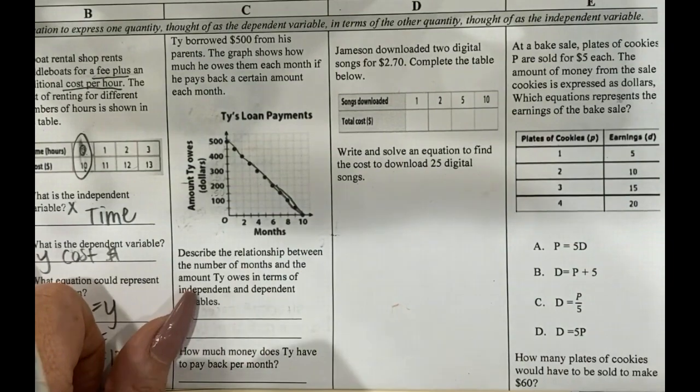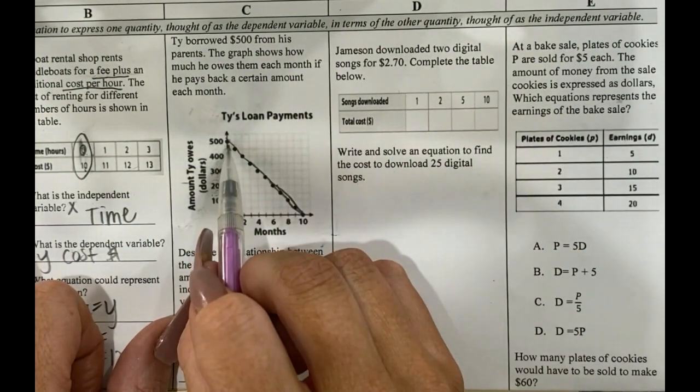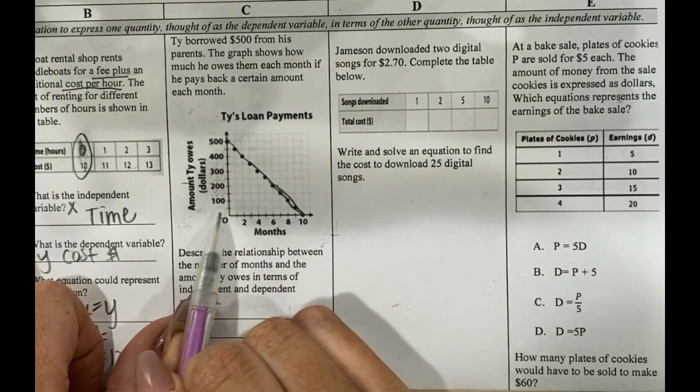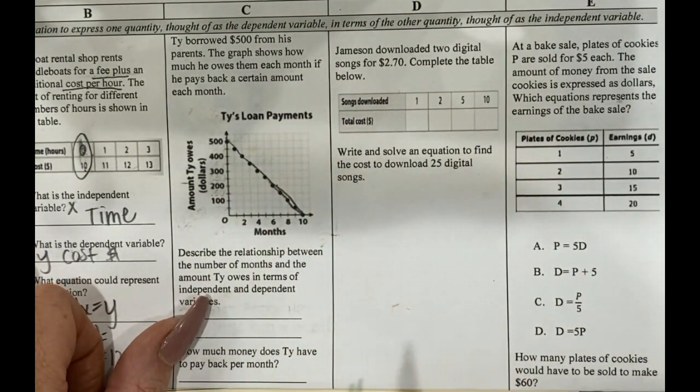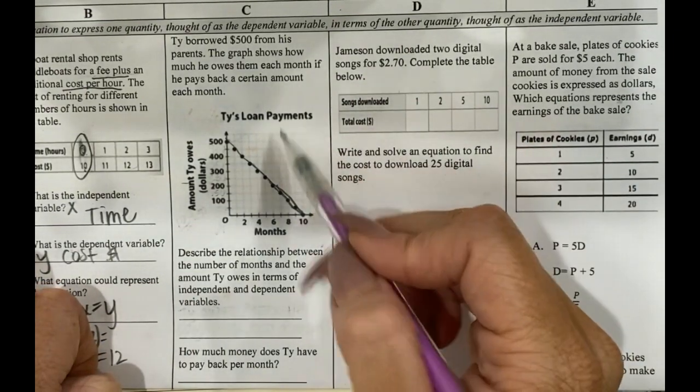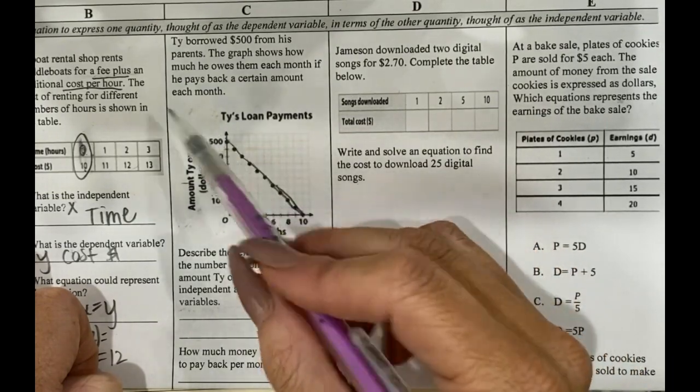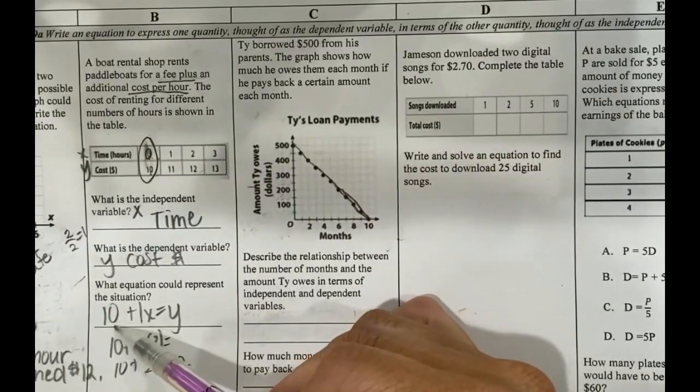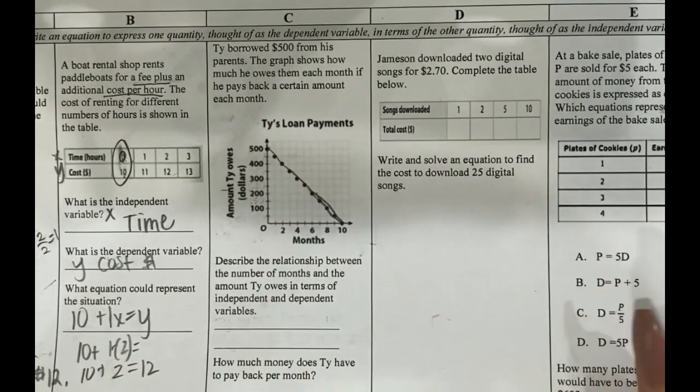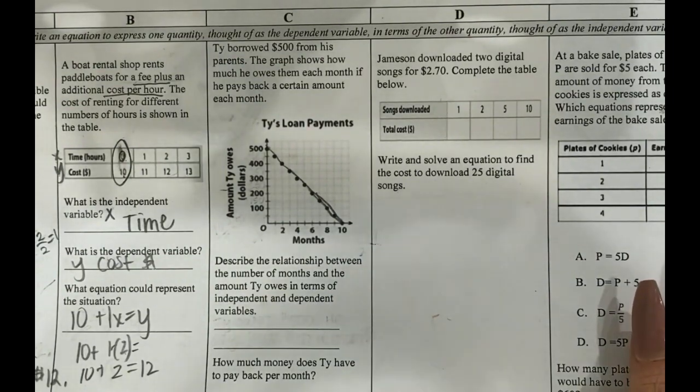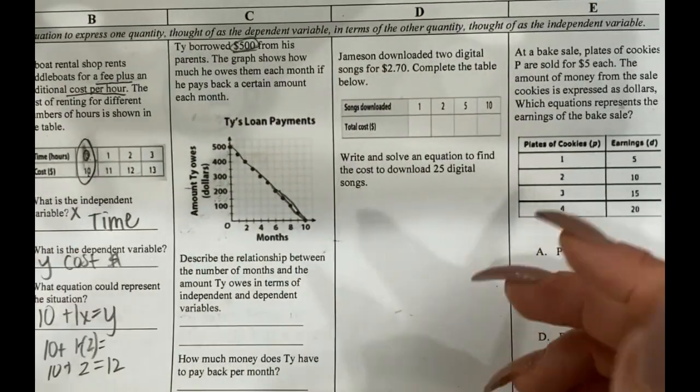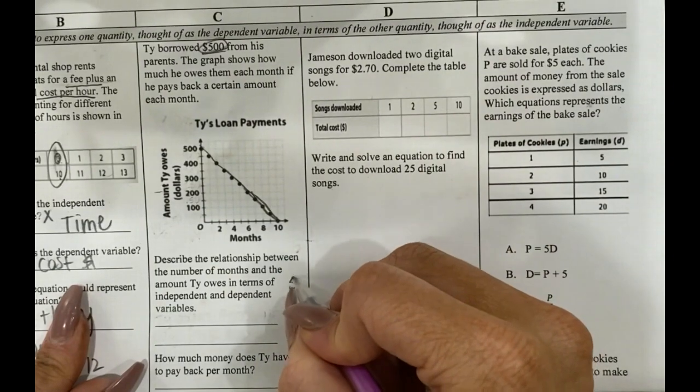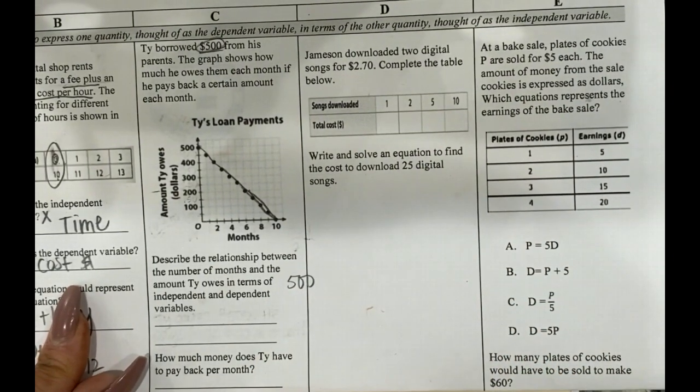So the first thing that you'll notice is that this is decreasing and it's decreasing because Ty is trying to pay back money. So the money is going down as the time and months goes by. Whenever you have a line that is decreasing, you are going to have an equation that has a negative in it. So this one is kind of similar to part B where you kind of have this other number here. And I'm not going to really get into the literal equation, because you'll see that in seventh grade, but I'm starting off with $500. So I know that 500 has to be part of my equation.